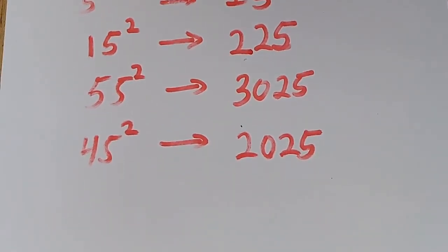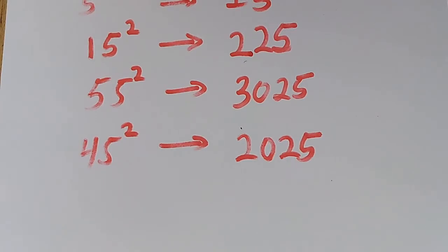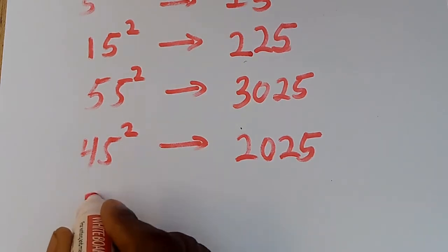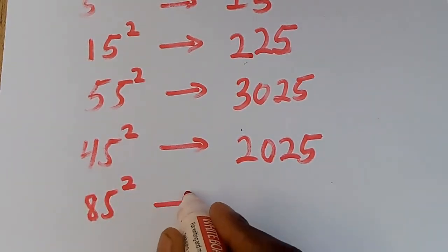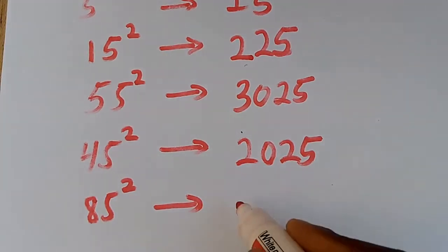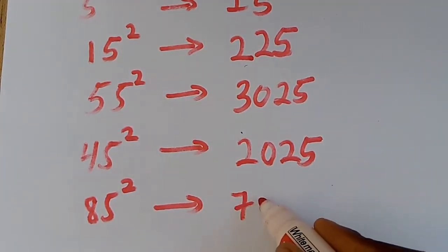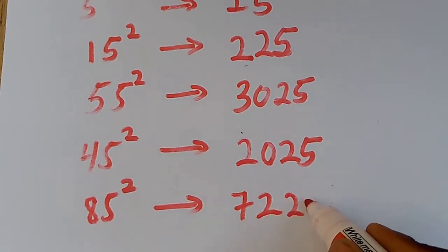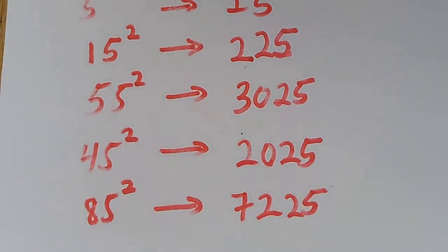By now I know that you are getting the trick. So let's take 85 squared — and 85 squared, the answer is 7225. So let me now come out with the trick.